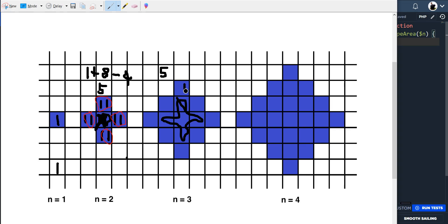So 1, 2, 3, and then the next row 1, 2, 3, 4, 5, 6, 7, 8, 9, 10, 11, and then 12. So if we do 5 plus 12.